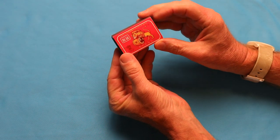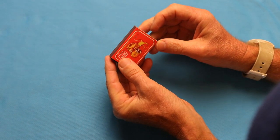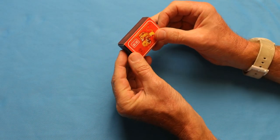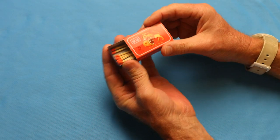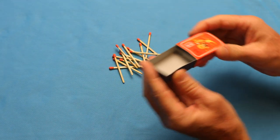For this one, you need a book of matches, or you could use toothpicks, straws, Q-tips, whatever you got. Long, thin items. And you need a total of 14 of them.